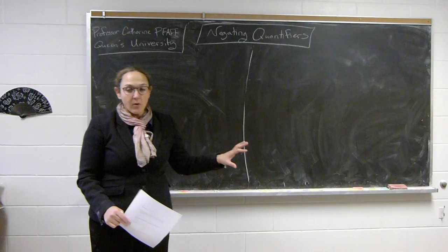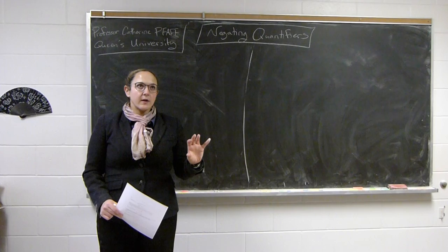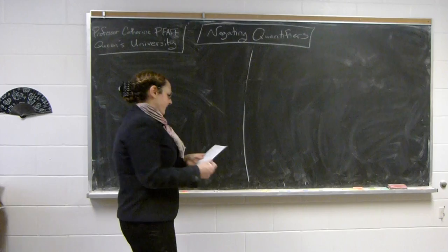We have the existential quantifier, which is 'there exists' — the backwards E. And then we have the universal quantifier, which is 'for all' — the upside-down A.